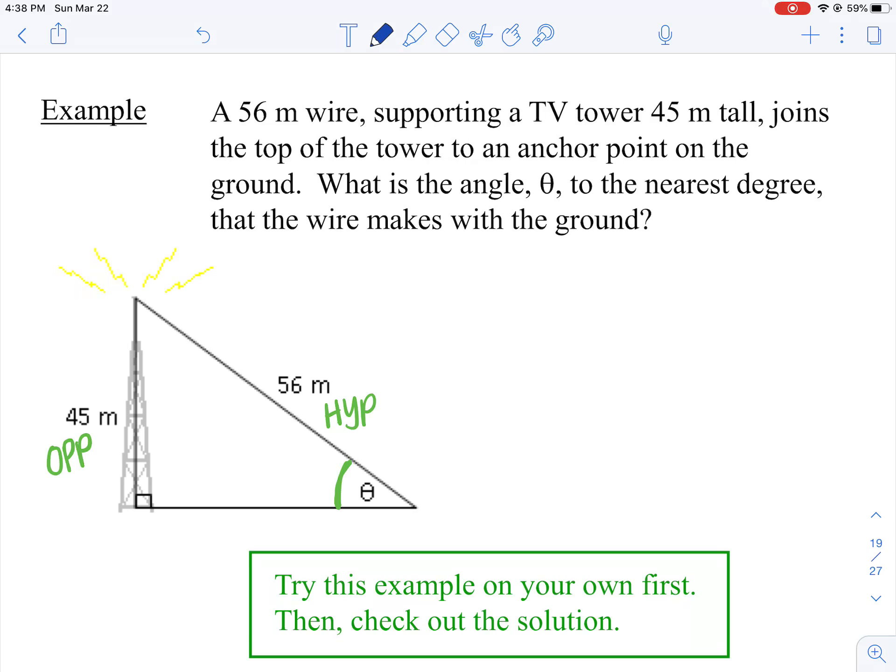So we're going to set up the equation first. It's going to be sine theta equals opposite over hypotenuse, so 45 over 56. To get theta by itself, you're going to do the sine inverse of both sides. So the sine will cancel out on the left, and then sine inverse of 45 over 56.